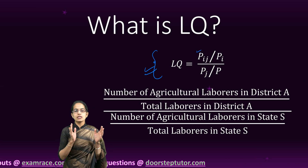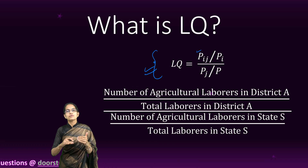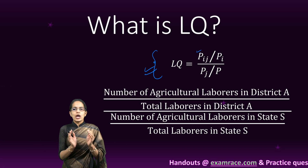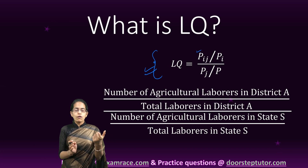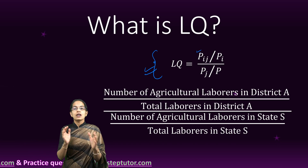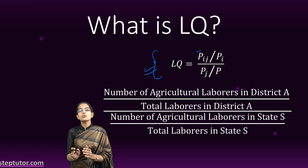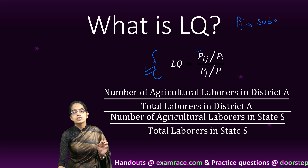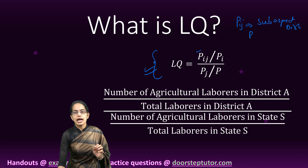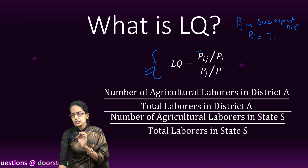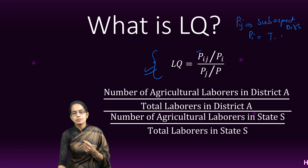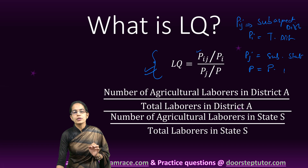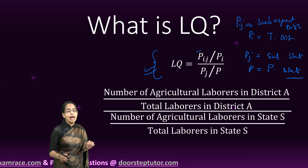We have PIJ which is the population of any sub-aspect — in this case agricultural laborers, but it could be any other sub-aspect of a bigger aspect, for example literacy: the number of rural or urban literates in contrast to the total number of literates in the district. So PIJ is the sub-quantity in the district, PI is the total population of that aspect in the district. This is compared to PIJ — the sub-aspect in the state — divided by P, which is the total population in the state. That is how we calculate the location quotient.